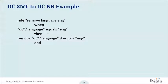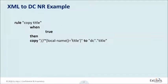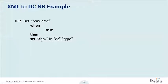Here we want to remove the English language for some reason — if the parameter within DC language equals English, then remove it. Moving to an XML example, here we're just doing a very simple thing: go and look for a tag called title and then copy its content into DC title — pretty straightforward. We can also set something: in this case, just set the string 'Xbox' in DC type.